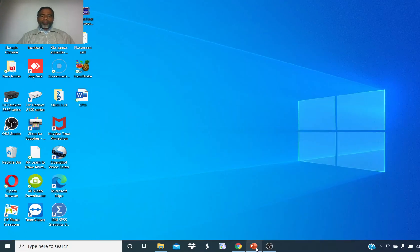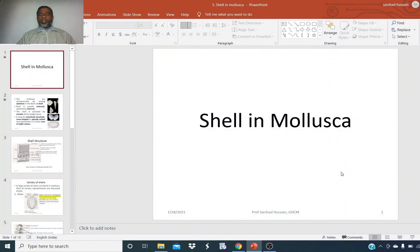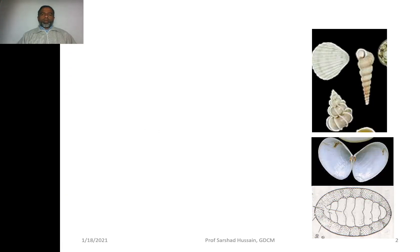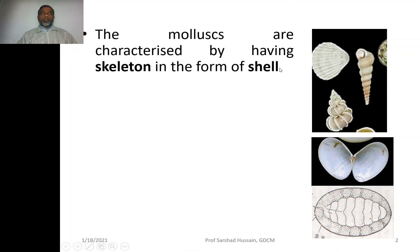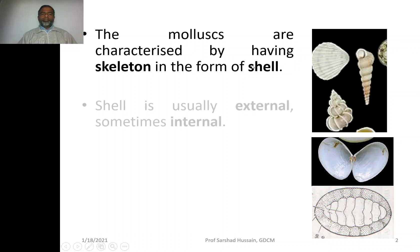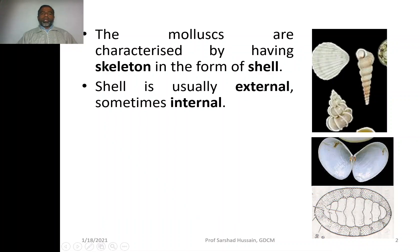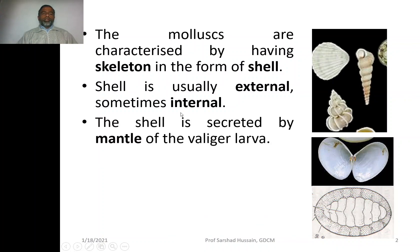Let us start with another topic: shell in Mollusca. As you remember, molluscs are characterized by having a skeleton in the form of a shell. The body of the molluscs is very soft, but the skeleton is present in the form of a shell. This skeleton may sometimes be present externally and sometimes internally. The shell is secreted by the mantle, which is the covering of the visceral mass — the soft body is covered by a membrane called the mantle, which secretes the shell.